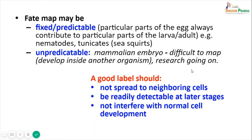There are certain important characteristics that a good label or marker used to prepare fate maps should have. First, a good label should not spread to neighboring cells — it should be restricted to the cells it is meant to label. Second, it should be readily detectable at later stages and should not get diluted during divisions. Third, a good label should not interfere with normal cell development or hamper any important cell processes.